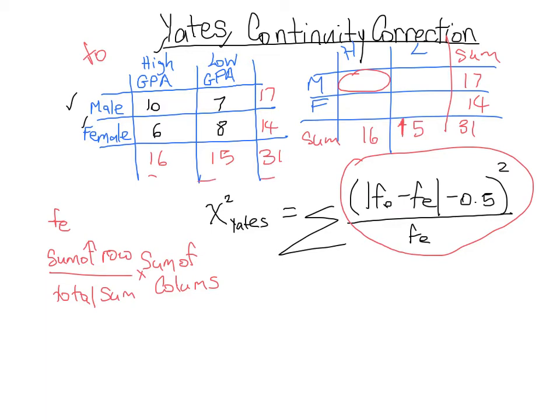All right, so in order to fill in this value, it's the sum of the row which is 17 over the total sum—so the total sum right here is 31—times the sum of the column which is 16. And once you've done that you should get 8.77.